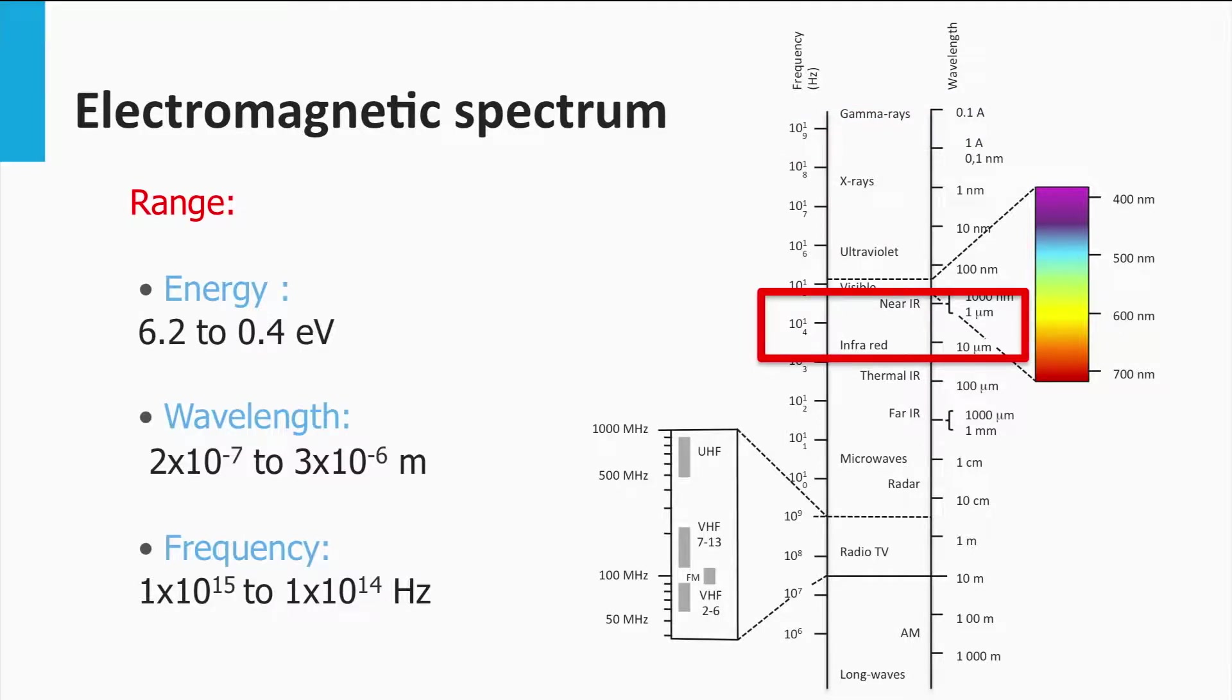On the low energetic side of the visible spectrum we find the near infrared and the infrared light, which has wavelengths of around 1 micron and 10 microns respectively. Microwaves are electromagnetic waves with wavelengths in the order of centimeters. Radio, TV waves are in the order of meters and tenths of meters and AM waves in the order of 100 meters.